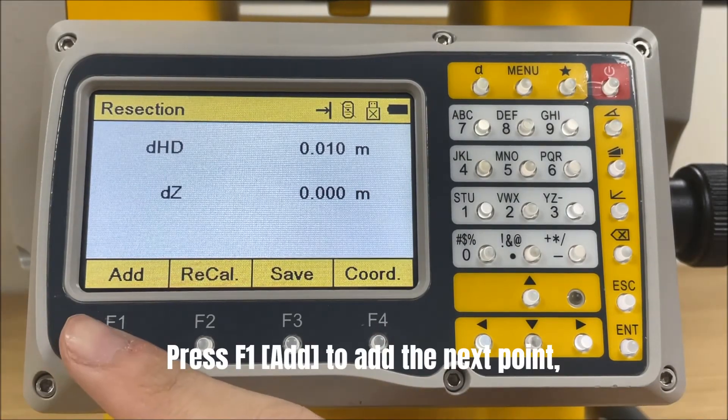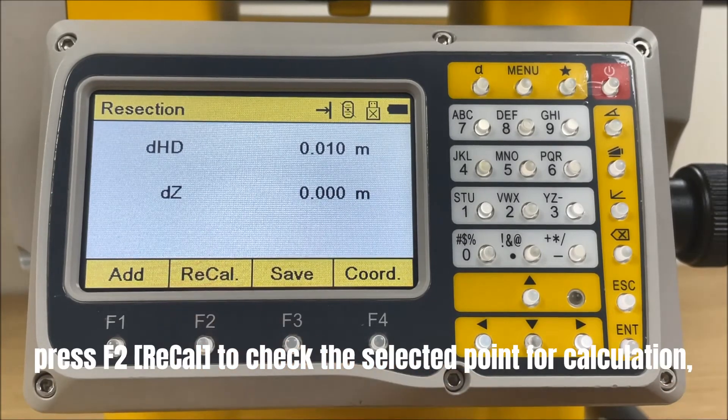Press F1 to add the next point. Press F2 to check the selected point for calculation.